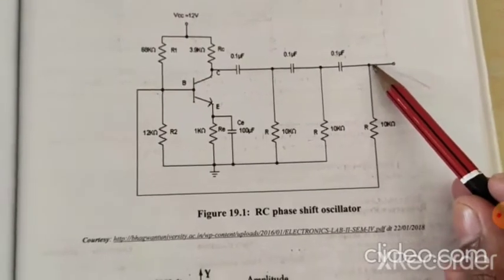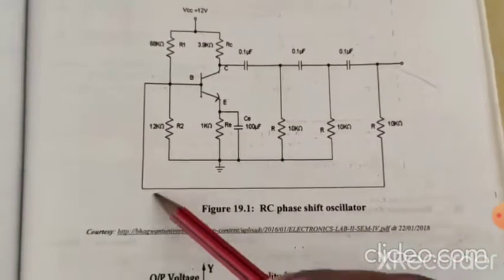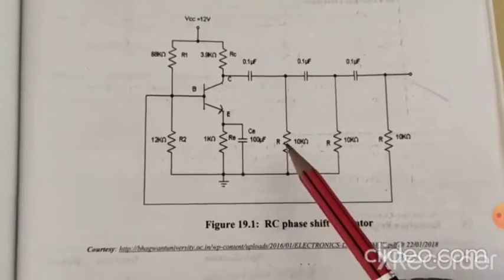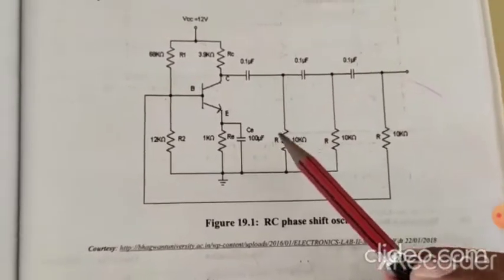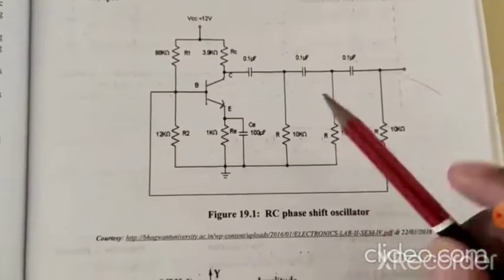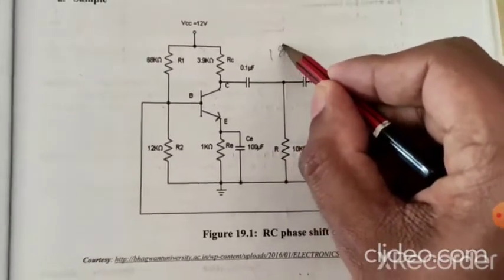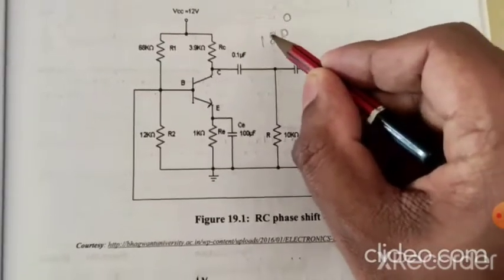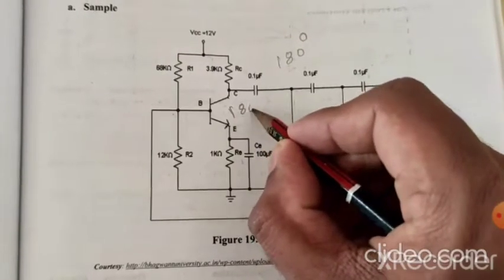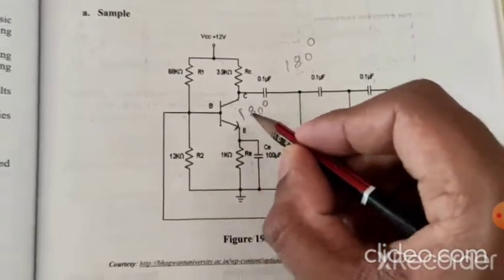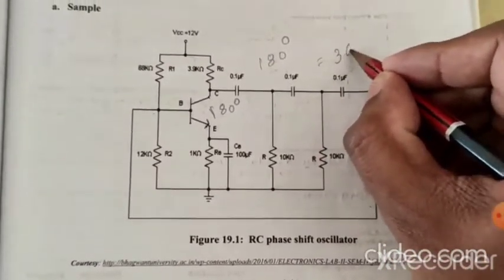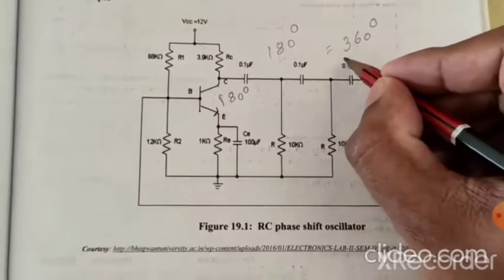These RC sections will induce 180 degrees of phase shift total, meaning each section will induce 60 degrees of phase shift. The CE amplifier transistor will also induce 180 degrees of phase shift. By combining these two phase shifts, we will get 360 degrees of phase shift.